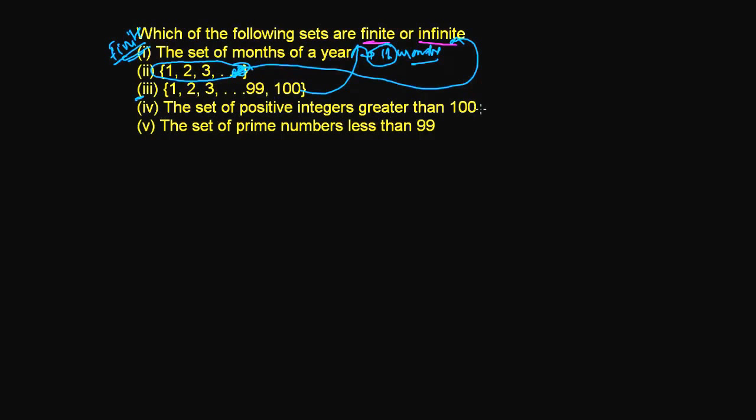The fourth one is the set of positive integers greater than 100. All positive integers greater than 100—that's 101, then 102, 103, and so on. It just goes on and on and never ends.